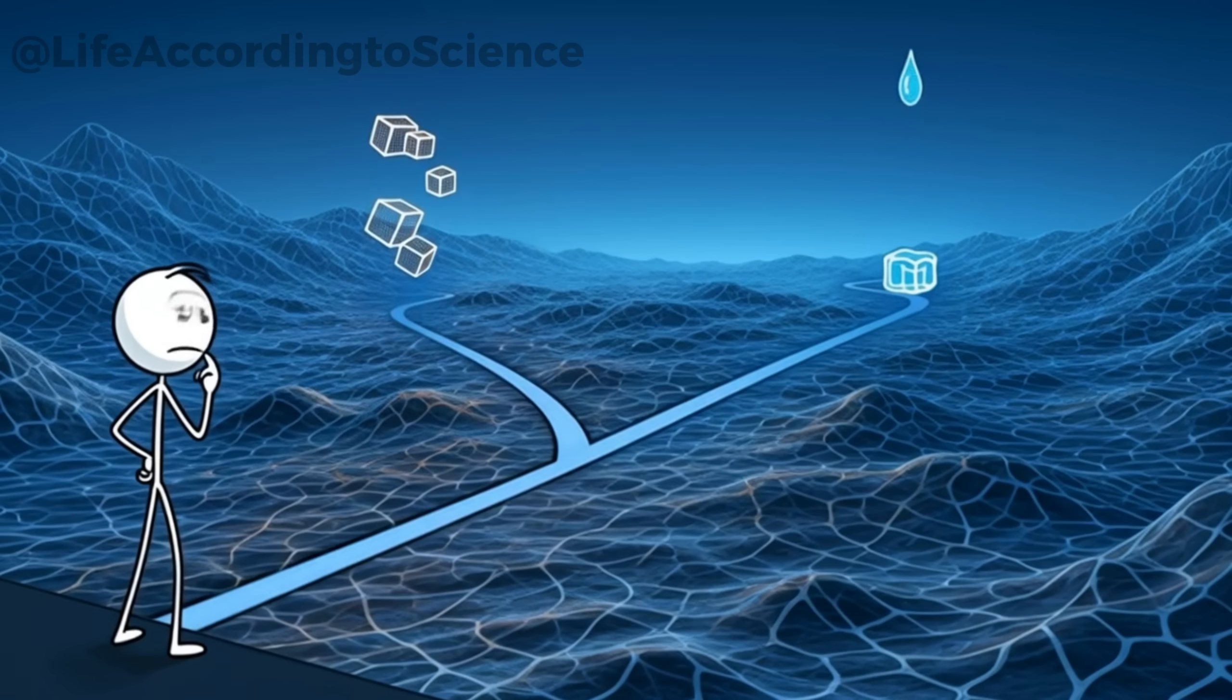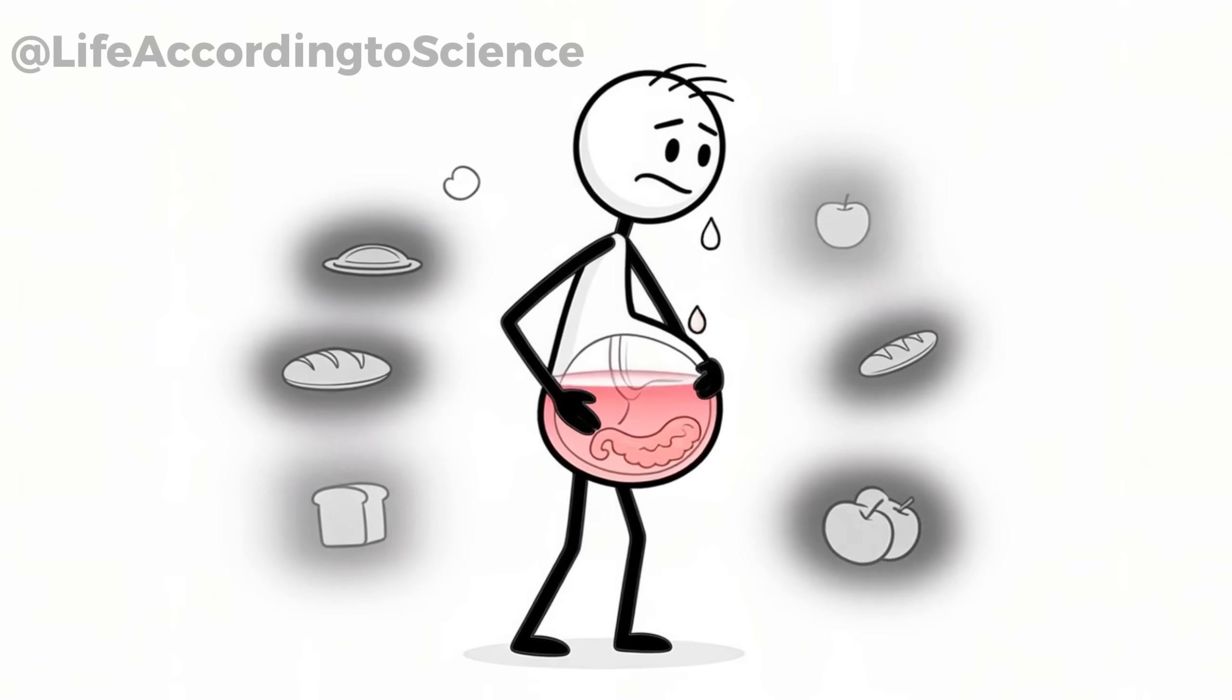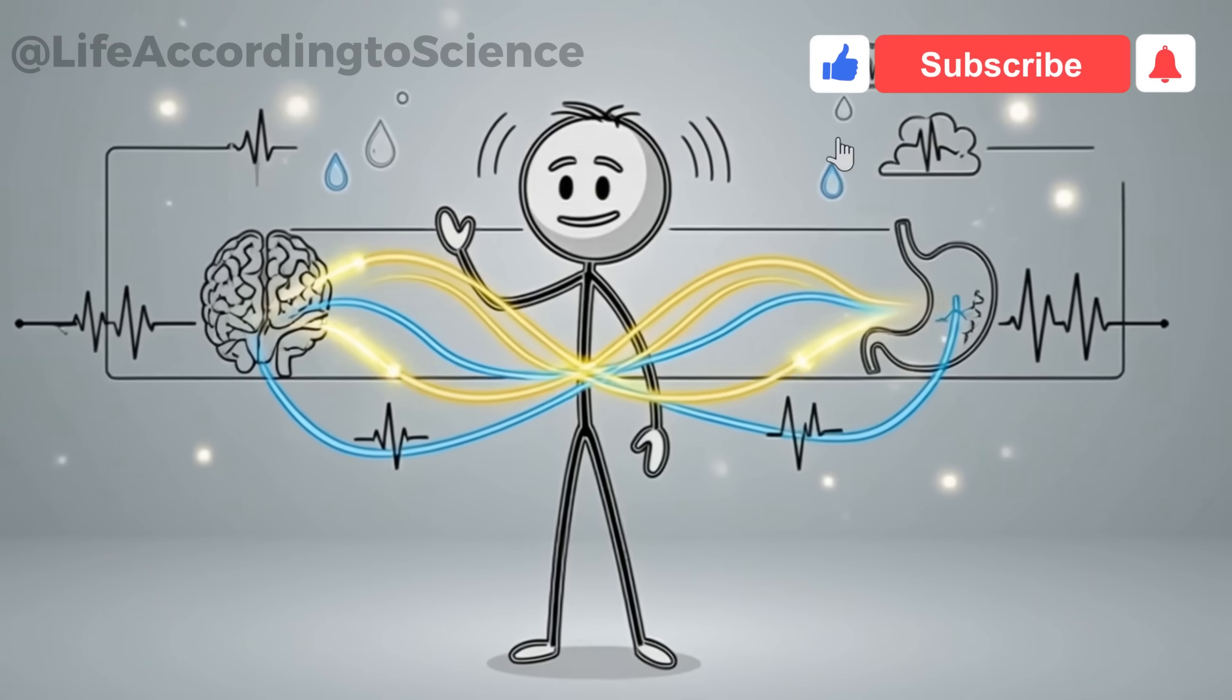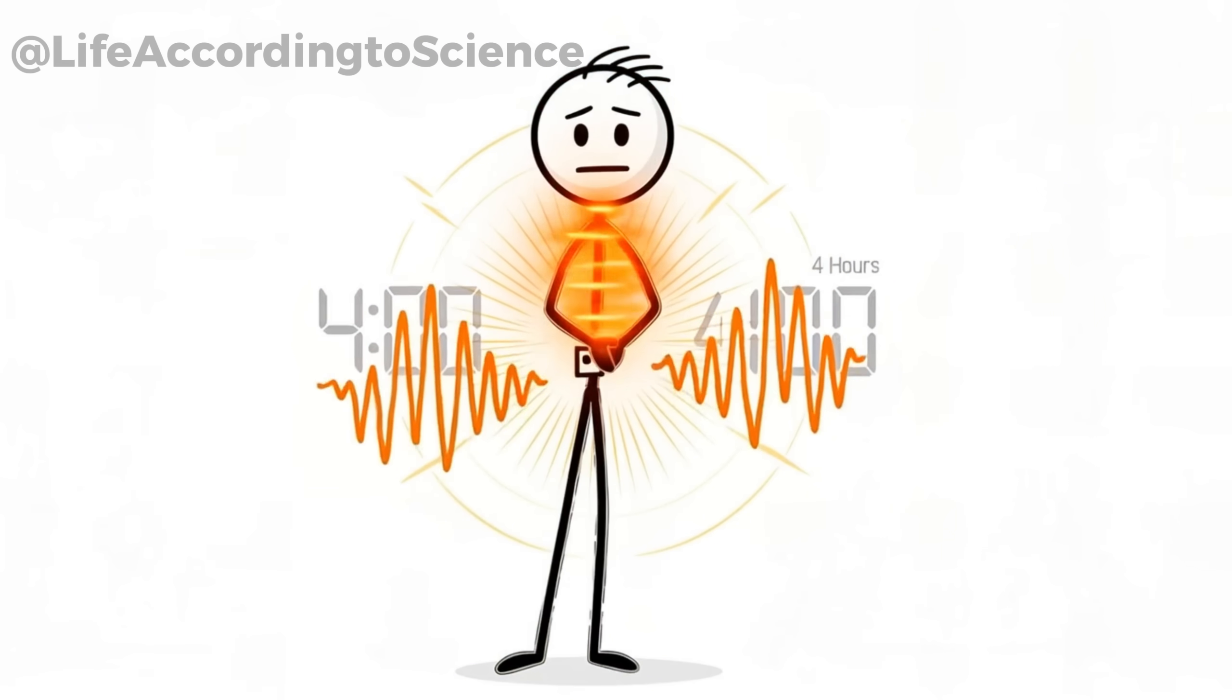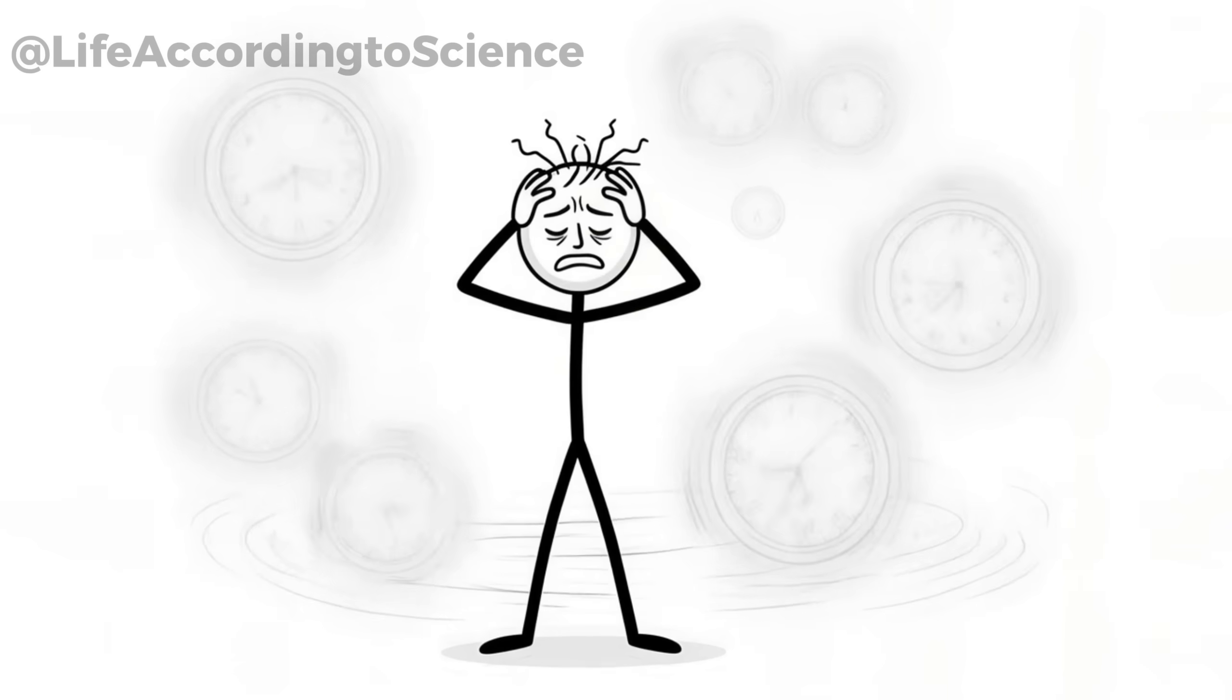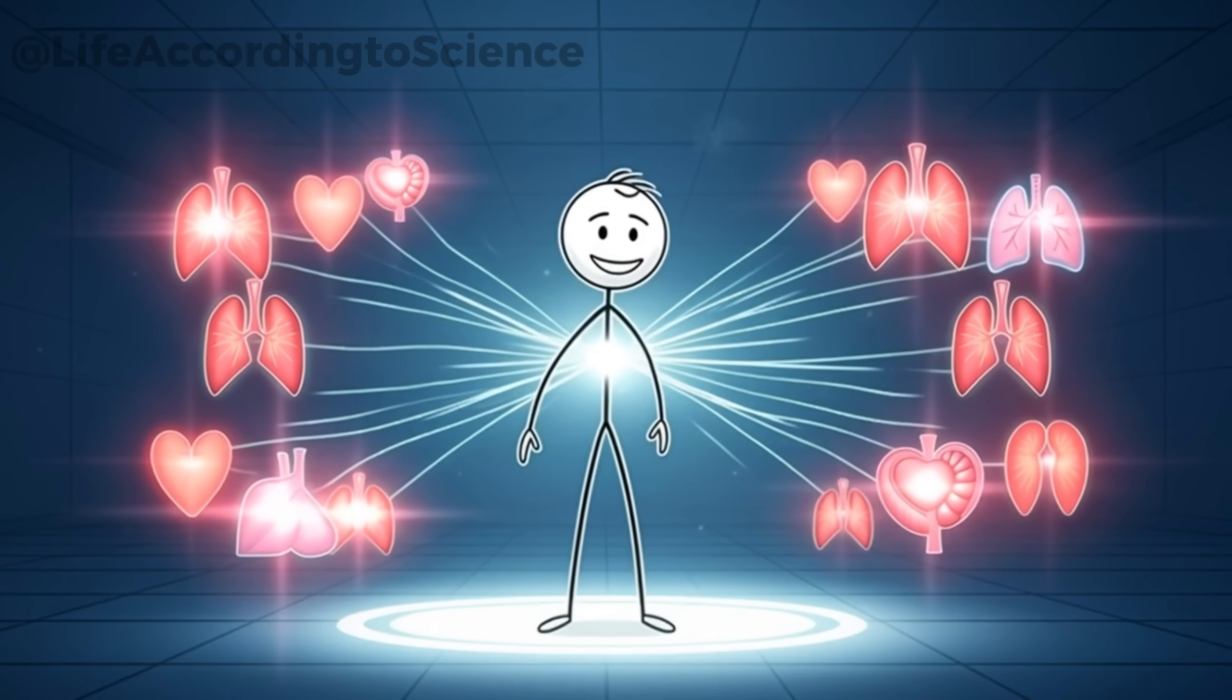The first few hours of fasting are a test. Your body must decide how to prioritize its precious fuel reserves. The stomach, though empty, still works. Digestive juices are released out of habit, almost expecting food that never arrives. Meanwhile, hormones start adjusting, signaling to the brain that energy conservation is now the priority. It's almost like flipping a switch inside your body.